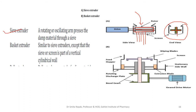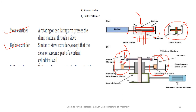Then there is the basket extruder, which is similar to the sieve extruder, but the sieve or screen is not at the bottom — instead it is present at the sides as part of the vertical cylindrical wall. The wet mass is fed in and extruded out in the form of thin cylinders from both sides, horizontal to the ground.